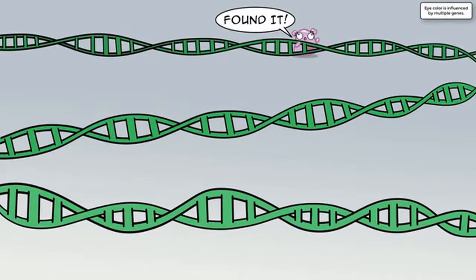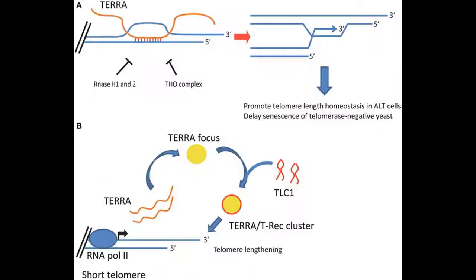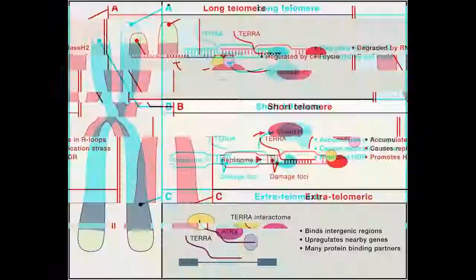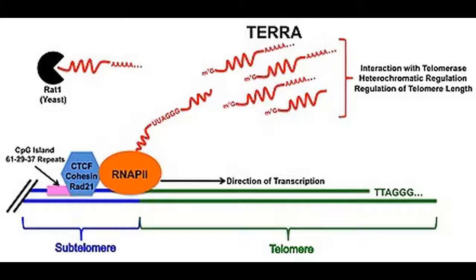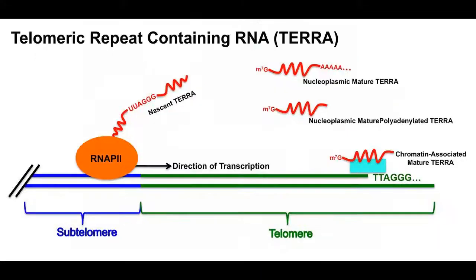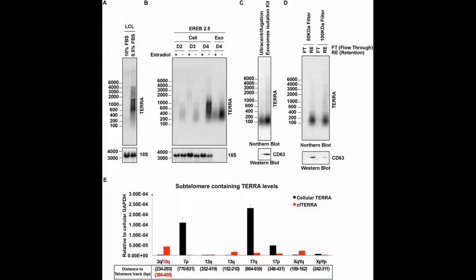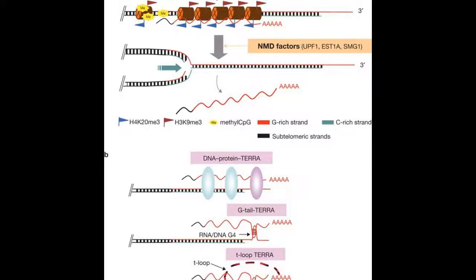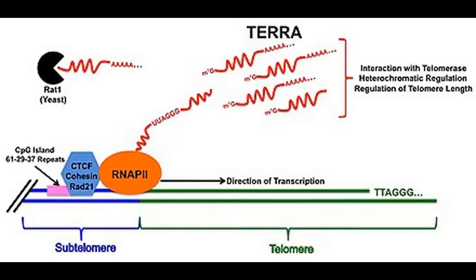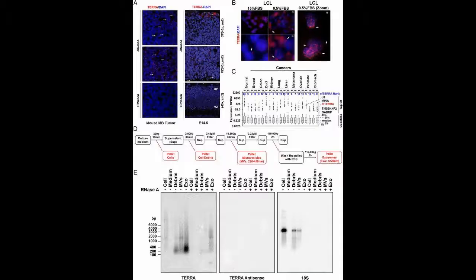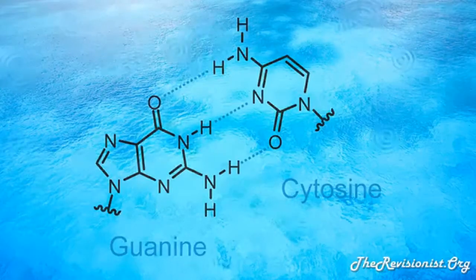One manner in which chromatin maintains its condensed heterochromatic state at the telomere is through the enzymes DNA methyltransferases 1 and 3b. Experiments where these factors have been depleted result in increased TERRA expression levels, suggesting that the methylation status of the subtelomeric region may help to regulate the expression of TERRA. Further post-translational modifications of telomeric histones may also play a pivotal role in TERRA regulation.